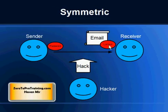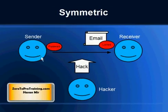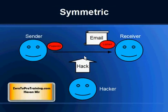Now the locked email has arrived to the receiver, but we have an issue — the receiver doesn't have the password yet, and this email can only be unlocked or decrypted using the password. So if the sender sends the password using the same media, the internet, the hacker can hack the password and the hacker can hack the email. The hacker will have both the email and the password, and this will defeat the whole purpose. So wherever we have two endpoints in the communication, symmetric encryption is not the best way. This was used in the past for communication between two endpoints and we had issues, so asymmetric communication was the answer.